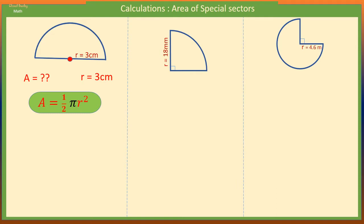That means the area is half of π times r times r. But 3 centimeters times 3 centimeters will give us 9 square centimeters. So we have A = 4.5π square centimeters.